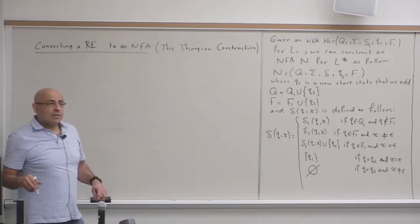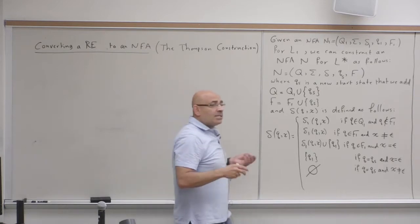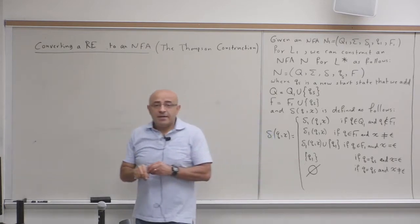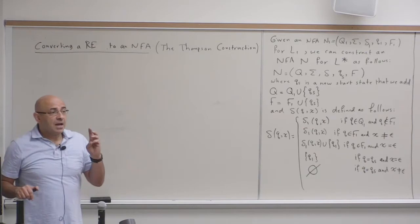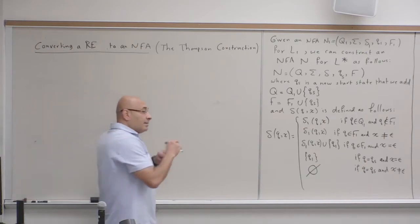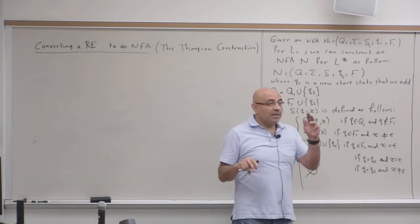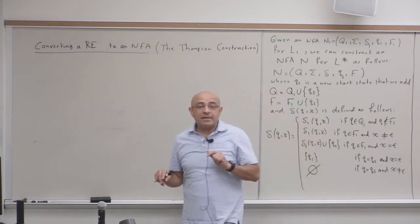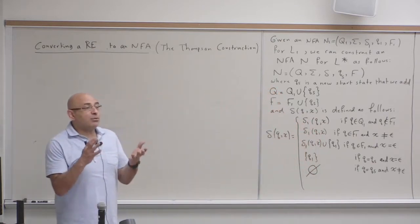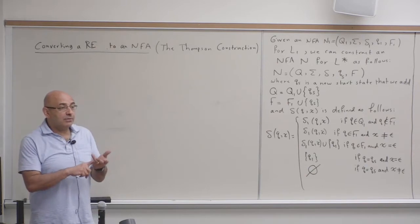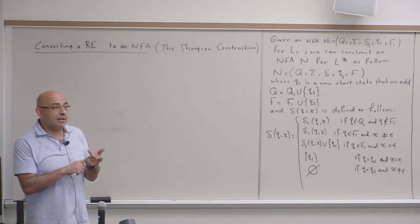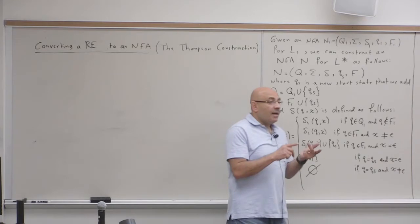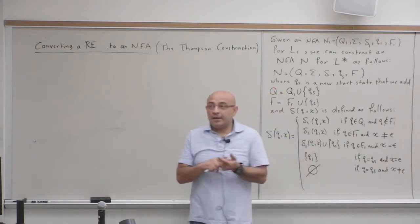It's very straightforward. The idea is: what's a regular expression? A regular expression will have the symbols of the alphabet connected by union, star, and concatenation. And we know how to construct an NFA for the union, for the concatenation, and for the star.